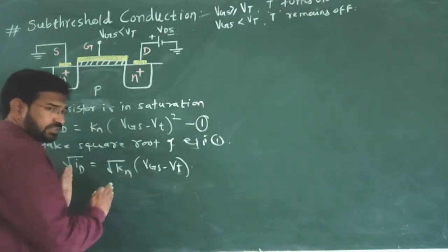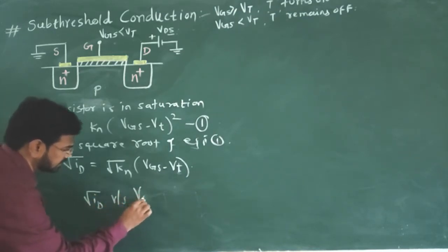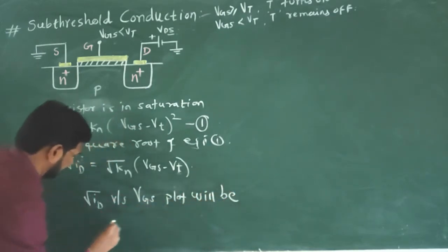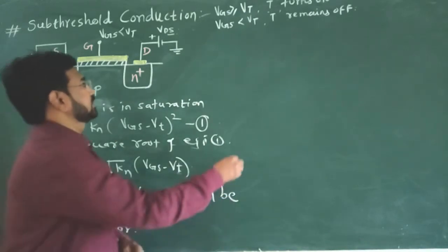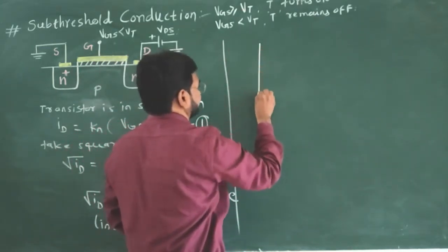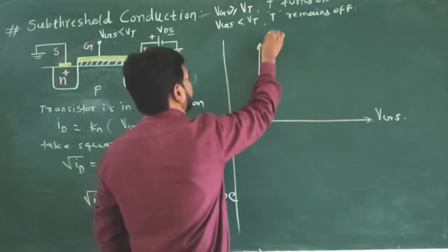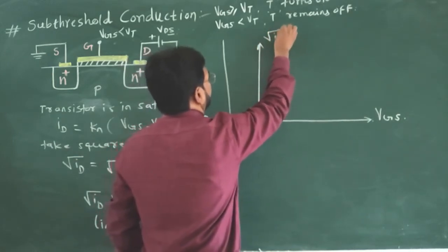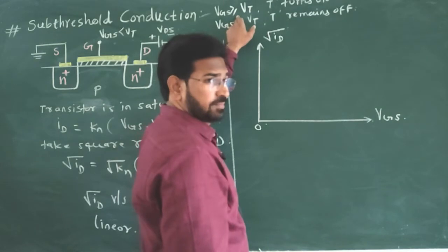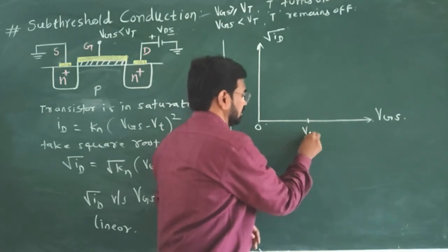Now, this gives us linear relation. So square root of Id versus Vgs plot will be linear. Let us plot it. On one axis I am going to take square root of Id and this axis is Vgs, and it is square root of Id which is in microamps or milliamps. Now, according to this what should be Id when Vgs equals Vt?